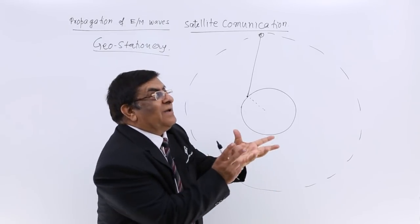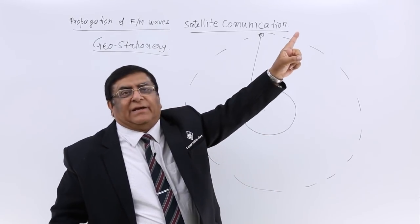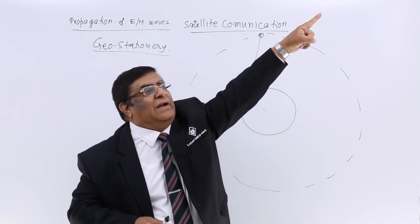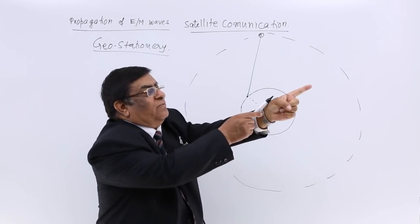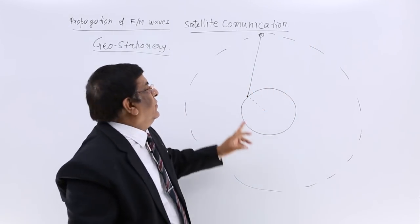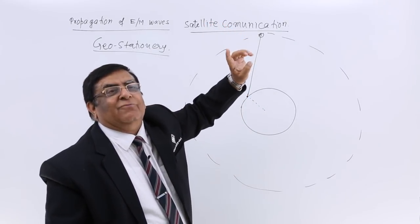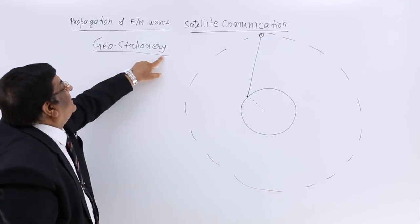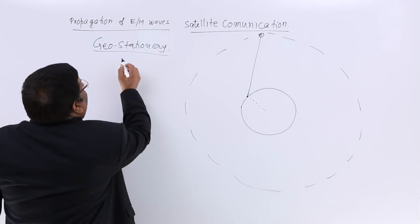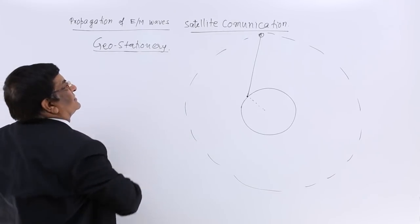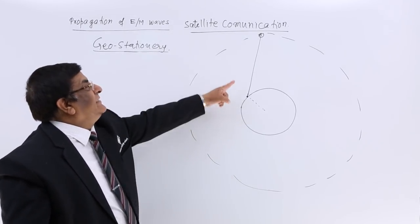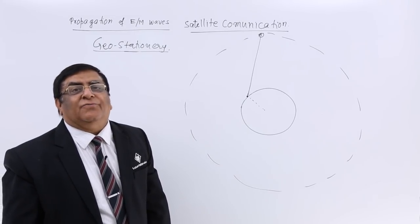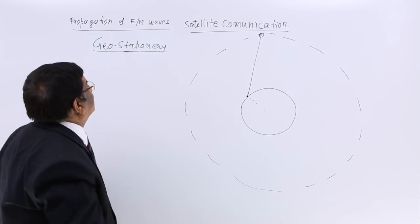That means if I am sending my wave to that satellite, it will always strike that. Because my station is rotating, the satellite is also rotating and both will remain as a set. So it will always strike this satellite and what is the condition for that? The condition for that is that satellite should be in geostationary orbit and such satellites are known as geostationary satellites. Now, it strikes that satellite. This satellite has got an arrangement of a repeater station.